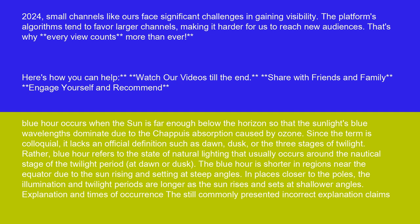The blue hour is shorter in regions near the equator due to the sun rising and setting at steep angles. In places closer to the poles, the illumination and twilight periods are longer as the sun rises and sets at shallower angles.